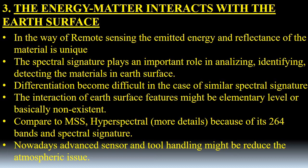The third one is about the energy matter interacts with the earth surface. In the way of remote sensing, the emitted energy and reflectance of the material is unique. The spectral signature plays an important role in analyzing, identifying, and detecting the materials in the earth surface. For similar spectral signatures, differentiation becomes very difficult and the interaction of earth surface features might be elementary level. Compared to MSS, hyperspectral may contain more details because it has 264 bands and spectral signature. Nowadays, advanced sensors and tool handling might reduce the atmospheric issue.